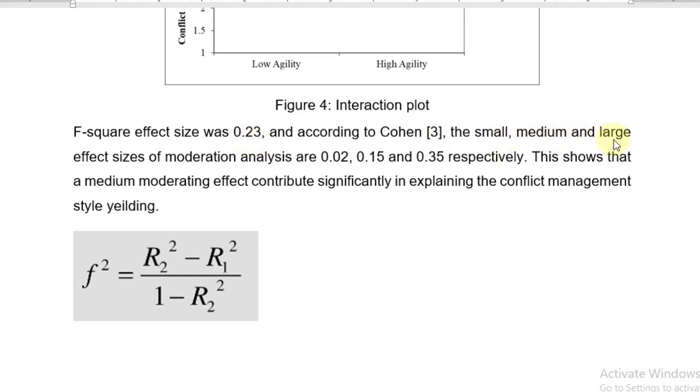So this shows that a medium, because our effect size 0.23 is greater than 0.15 but less than 0.35, it's a medium moderating effect that contributes significantly in explaining the conflict management style yielding. Thanks for watching the video. You can contact me on the email as well as on the WhatsApp. Bye.